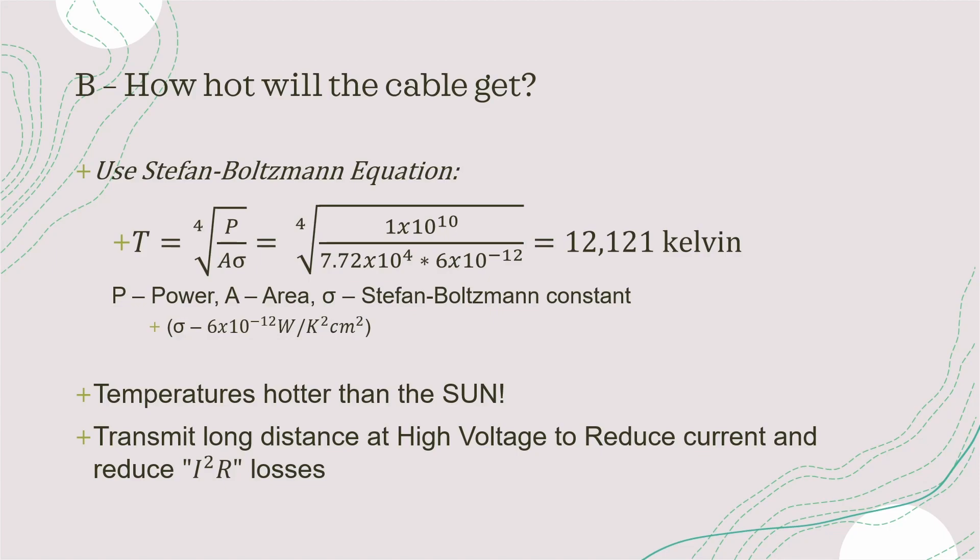You have a lot of losses in the system due to your current and you can reduce the current consumption by increasing the voltage. For long distances you want to transmit your power at 15 kilovolts or maybe 30 kilovolts and that will reduce your current significantly, reducing your I squared R losses.